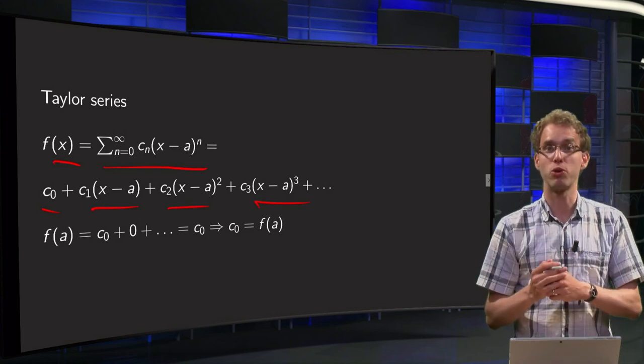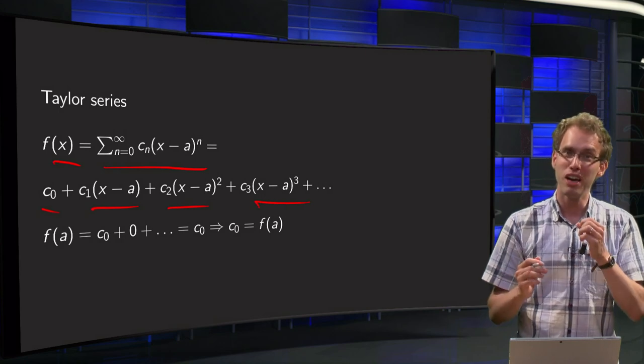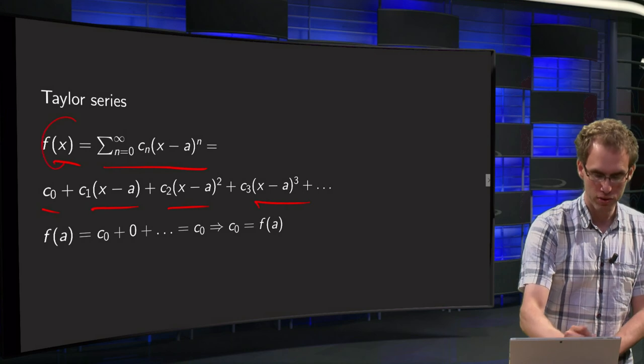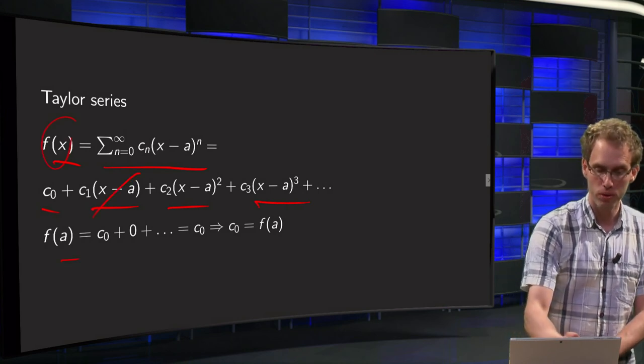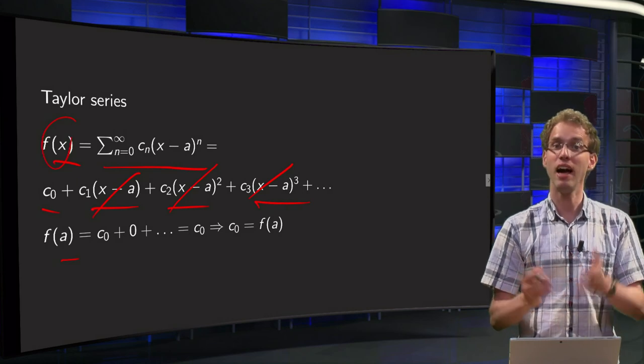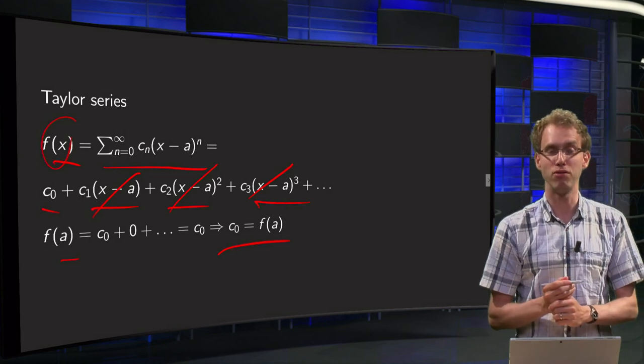And now we want to find all those coefficients c0, c1, c2, etc. for a given function. If you now plug in x equals a to the left you get f, and to the right then all those terms cancel out. So we get f(a) equals c0. Hey, we have already found our first coefficient.